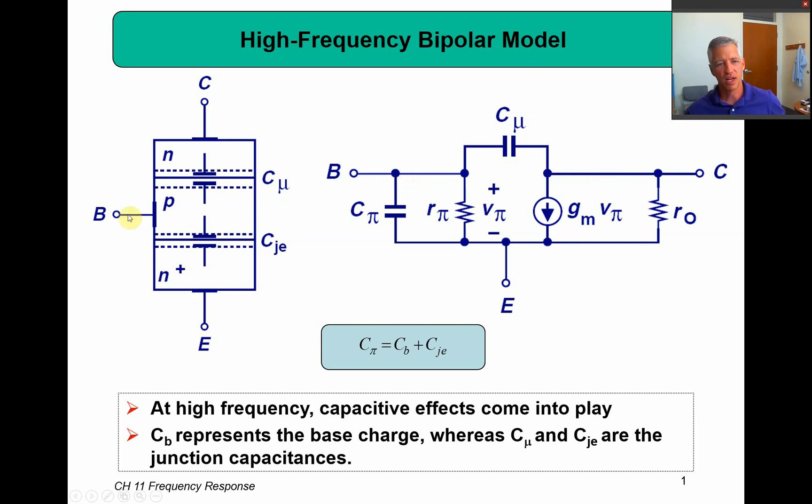I also have some capacitance between my base and my emitter, which is going to be this base capacitance plus this junction capacitance. They call that C_pi because it goes in parallel with my R_pi. And that's the combination of these two. So I'm going to add in this capacitor and this capacitor into my BJT small signal model.